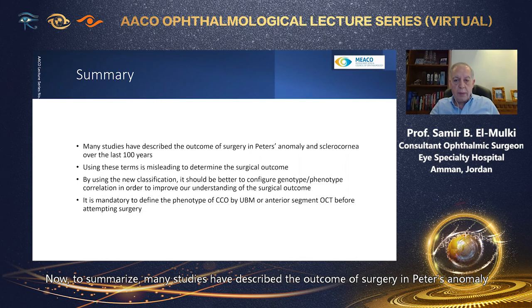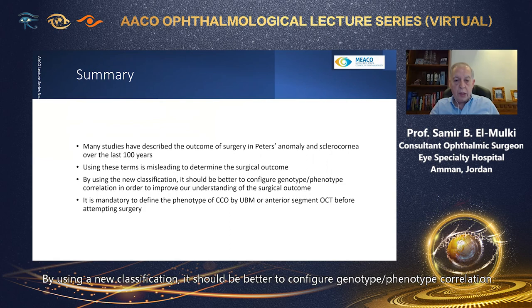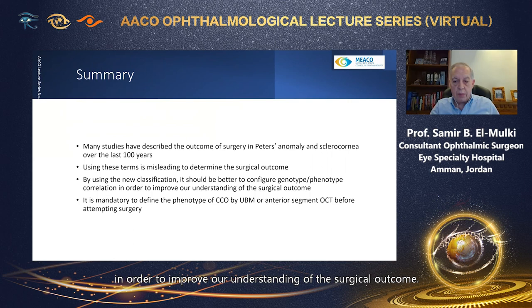To summarize: many studies have described the outcome of surgery in Peter's anomaly and sclerocornea over the last 100 years, but using these terms is misleading when determining surgical outcome. By using the new classification, it should be better to configure genotype-phenotype correlation in order to improve our understanding of surgical outcome. It is mandatory to define the phenotype of CCO by UBM or anterior segment OCT before attempting surgery.